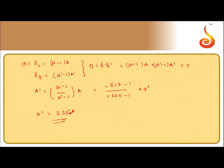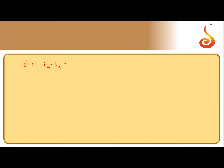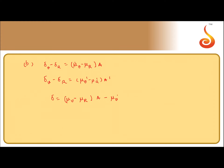Now let us calculate the angular dispersion produced by the crown glass prism. The angular dispersion is given by δv − δr = (μv − μr)A, and the flint glass prism produces a dispersion of (μ'v − μ'r)A'. The net angular dispersion is Δ = (μv − μr)A − (μ'v − μ'r)A'.